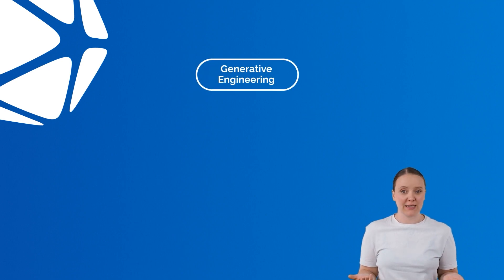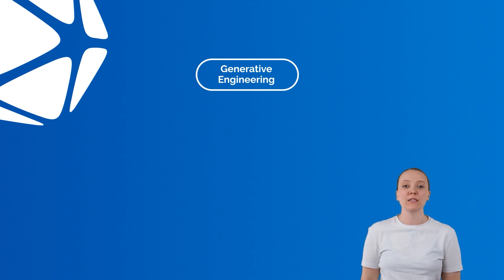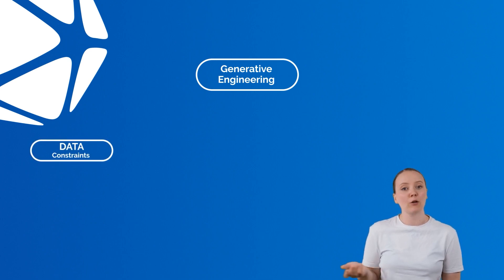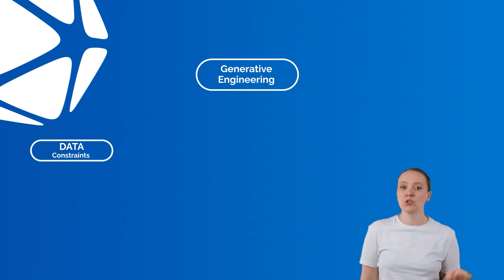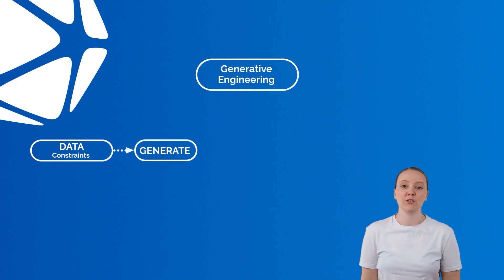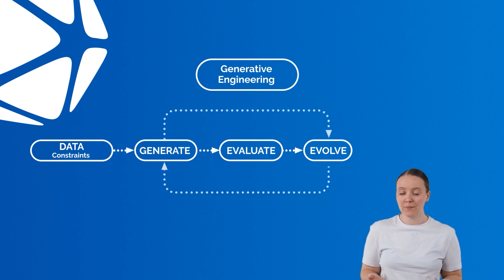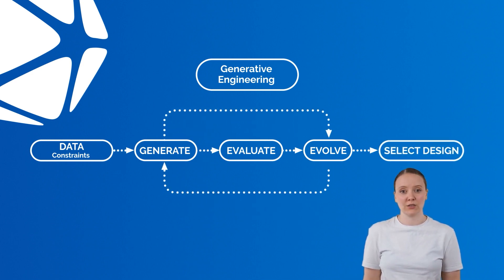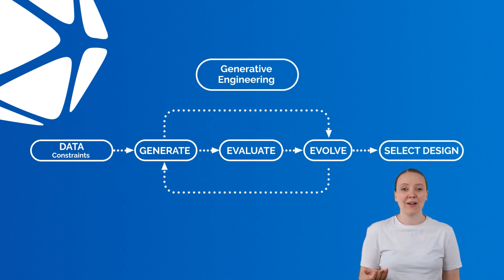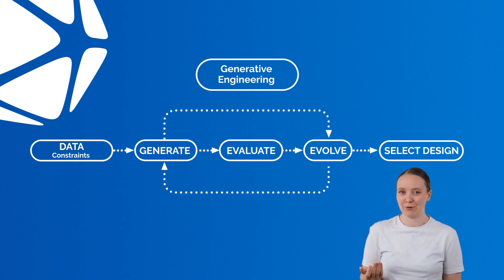Any Generative Engineering process runs according to a pattern. The starting point is input data, for example boundary conditions or goal criteria. Next, the geometry is generated in the generative part and evaluated in the evaluative part. Those two parts are run through iteratively, and lastly the best design is chosen. Let's check out a short video to gain a better understanding of the Generative Engineering approach.